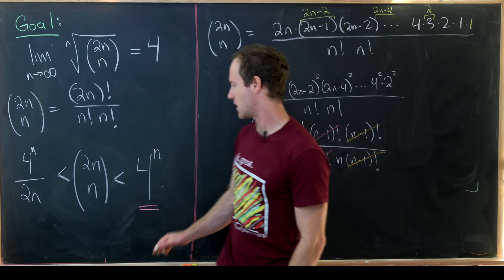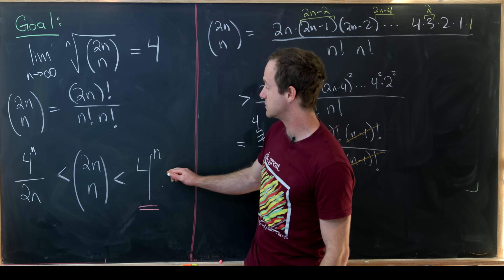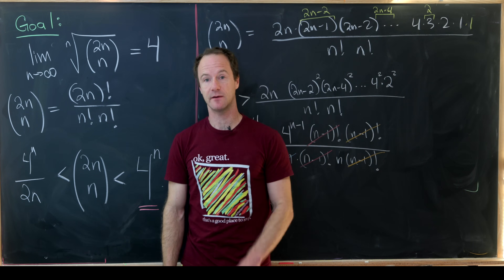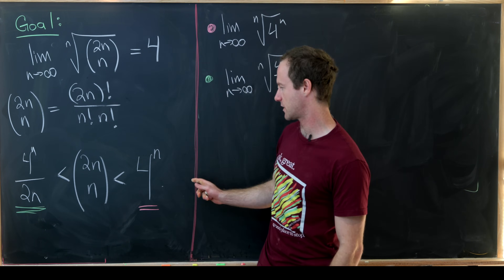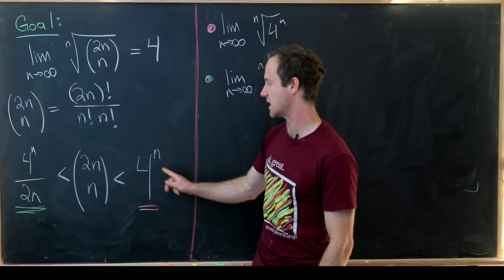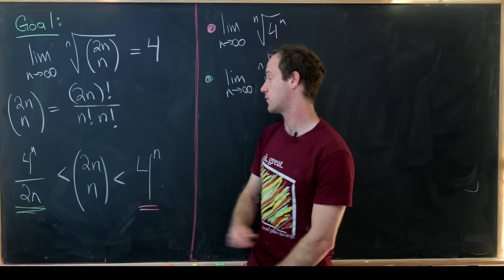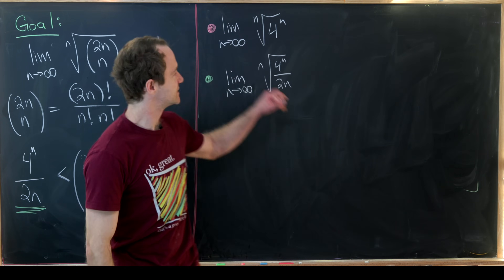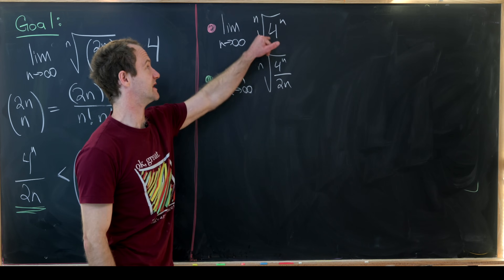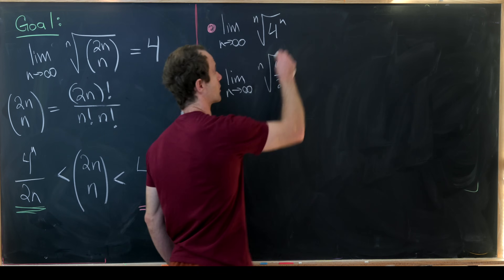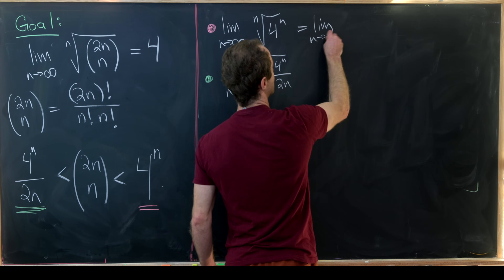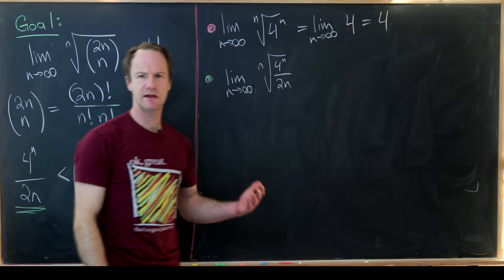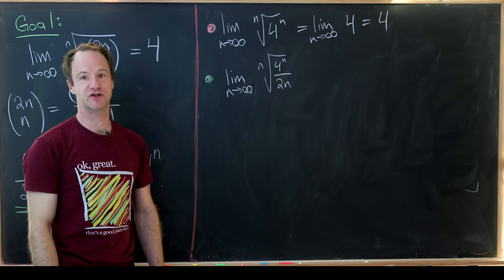Now it's a matter of calculating the limits of the nth roots of these two bounds. The first one is easy: the nth root of 4 to the n is just 4. So this becomes the limit as n approaches infinity of the constant 4, which is 4, since the limit of a constant sequence is always that constant.